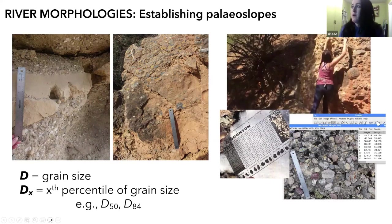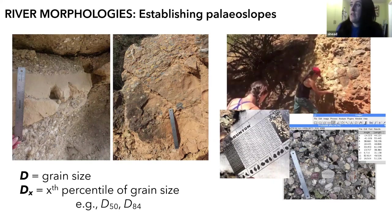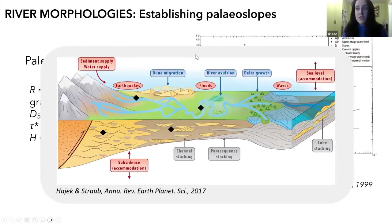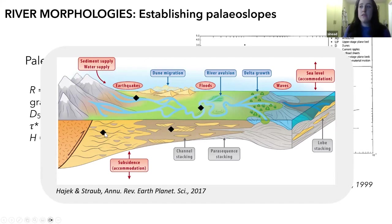Here's an example of how we might measure grain size in the field. This is myself and my field assistant doing a pebble point count of alluvial fan deposits in Utah. Once we've done that, we can put our estimates of paleoslope into regional context. I was following these systems upstream to downstream, measuring flow depths and grain sizes in the alluvial fan deposits upstream, and tracing it downstream to where it was more meandering.